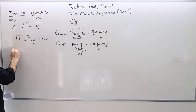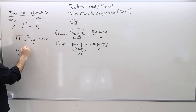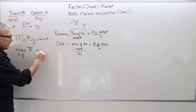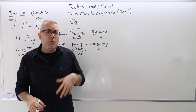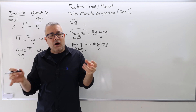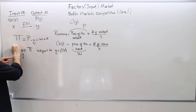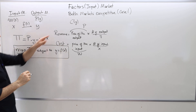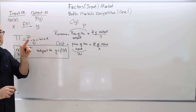The firm is choosing X and Y to maximize profit. It chooses how much input to buy — how many labors to hire — and how many outputs to produce. Maximize profit by choosing X and Y, subject to the constraint that Y must equal F(X), since you have a fixed technology. So the optimization problem is: maximize π = P·Y − W·X, choosing X and Y, subject to Y = F(X).